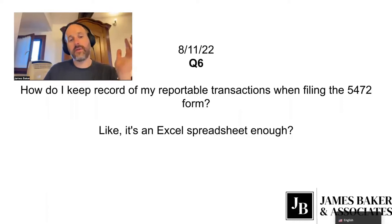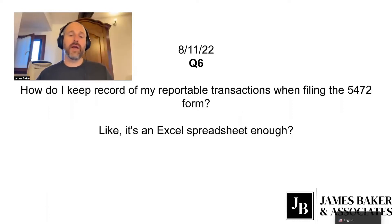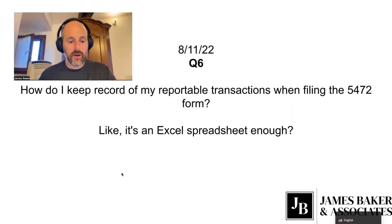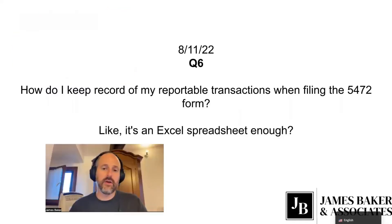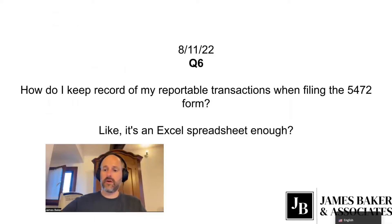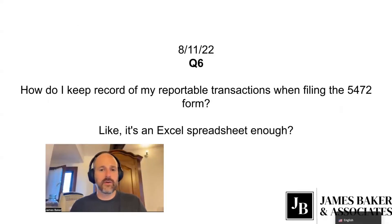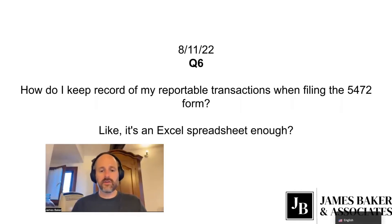The IRS works off of bank transactions — that's how they audit and how they review things. So if you have your transactions from your bank account in Excel and organized, then that's great for related party transactions. If they're not organized like that, there's a box on part six or so where you can check and disclose that on the form.